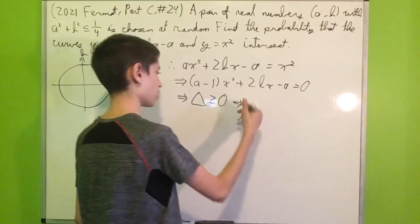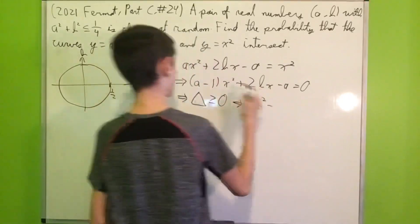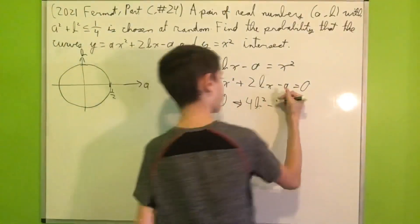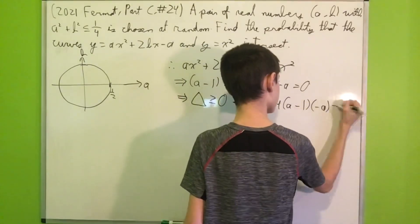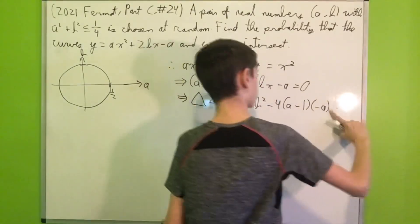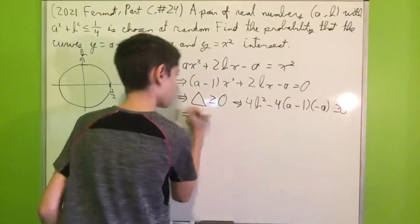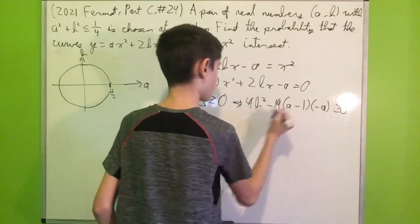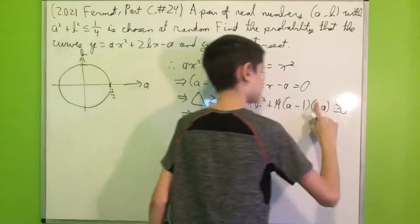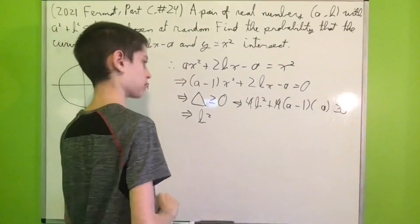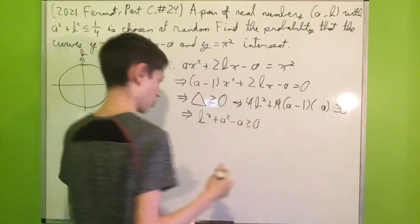So that means our discriminant Δ must be ≥ 0, because if it was negative we'd get complex values for x which we don't want. So that means this squared and this squared, so 4b² - 4(a - 1)(-a) ≥ 0. And now if we expand everything we can cancel the 4s, so we have b² and the minus cancels out the two minuses to make a plus, so we have b² + a² - a ≥ 0.